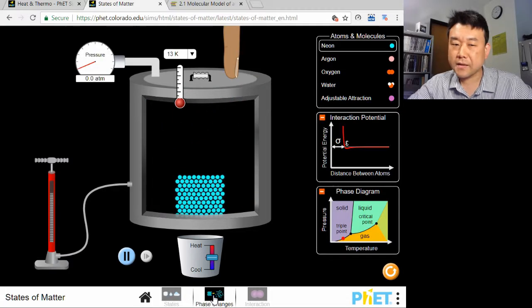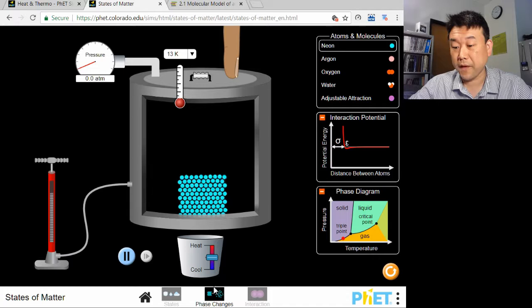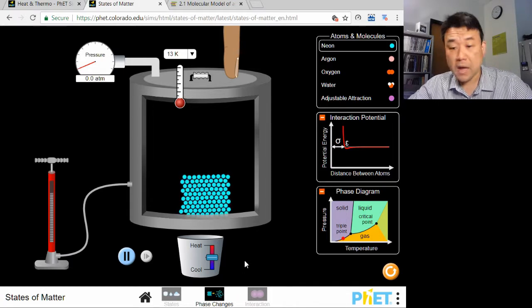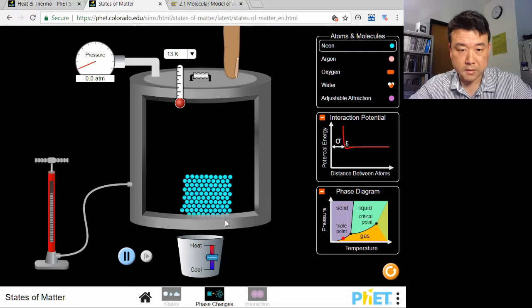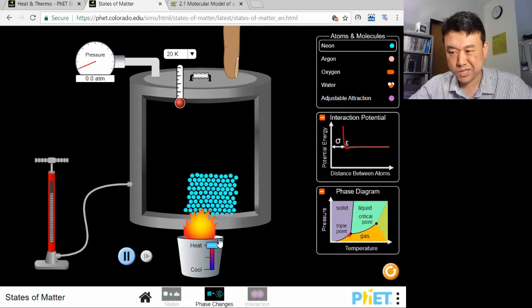The second thing you can see, and it's easier to see with the simulation under phase changes, is where pressure comes from. Let me heat up this neon solid until it turns into gas at some reasonable temperature.